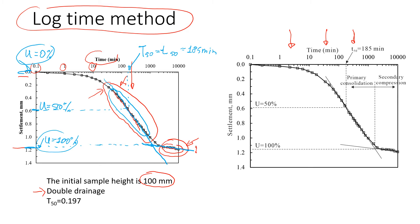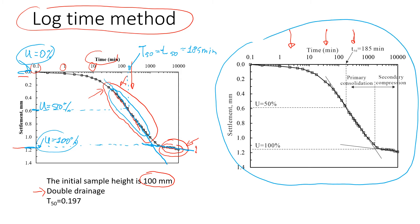This is how to draw it using a ruler or any drawing tools. Now let's calculate the coefficient of consolidation. Using the formula from the previous slide, the coefficient of consolidation Cv equals the time factor times Hdr squared, divided by t50 — the time necessary to achieve 50% consolidation.